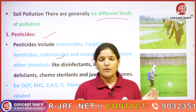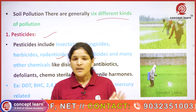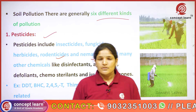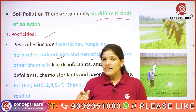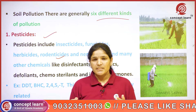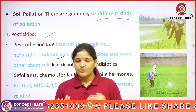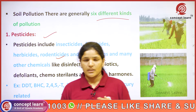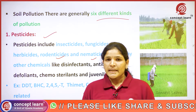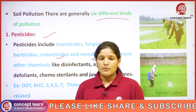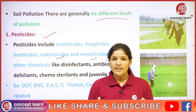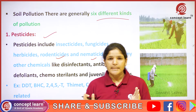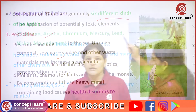Whenever the pesticides are used indiscriminately and in over-usage, they affect the environment. Pesticides contain many harmful chemicals, so they affect the environment. We have to use pesticides in the right, optimum amount.